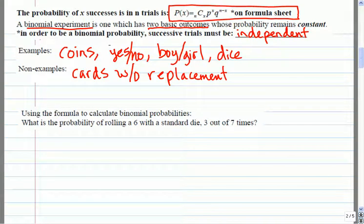Okay, so let's use the formula and we'll calculate some probabilities. This actually appeared in the non-calculator portion as well because you get the formula. Sometimes you're asked just to be able to show that you recognize it as a binomial experiment and that you can fill it in. So for example, if you want to roll a six with a standard die and you have to do this three out of seven times.